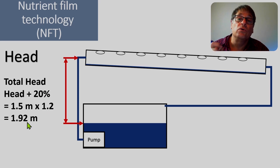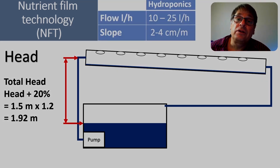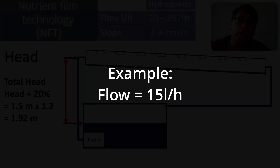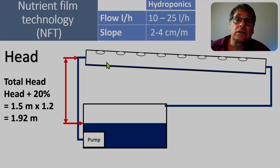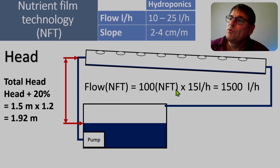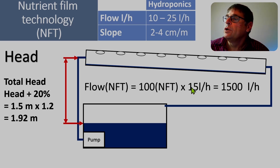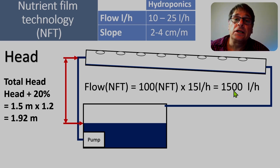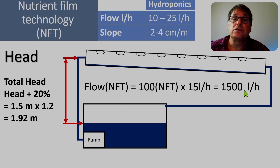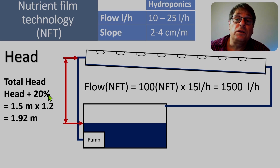For our example, let's use 15 liters per hour and let's say we've got 100 NFT pipes. So we take 100 pipes multiplied by 15 liters per pipe, which gives us 1,500 liters per hour. So we've got our two parameters: 1,500 liters per hour is our flow and 1.92 meters is our head. By adding 20% to our measured head, we've also compensated for the friction in the pipes.